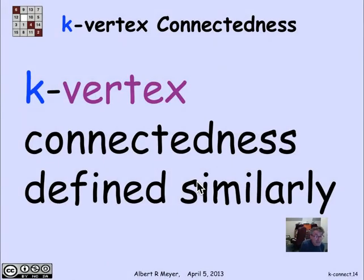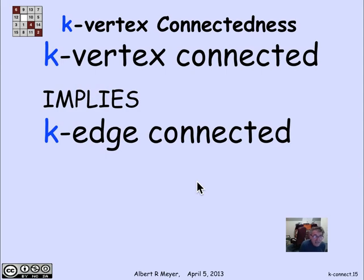There's a corresponding definition of vertex connected, meaning it's k-vertex connected if you can remove any number of vertices up to k, and it will stay connected. If it's k-vertex connected, it's certainly k-edge connected, but not conversely.